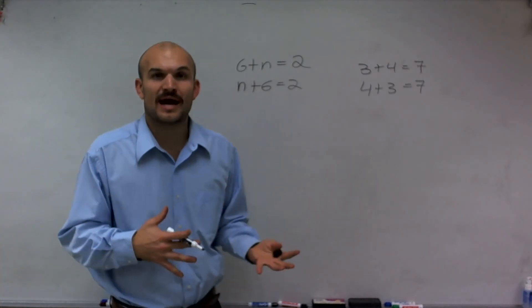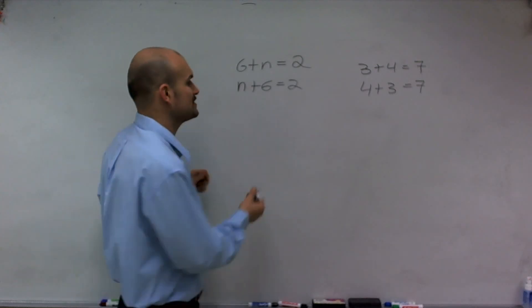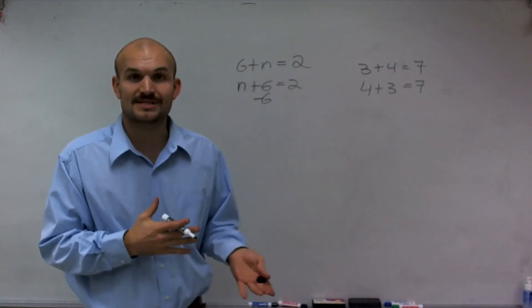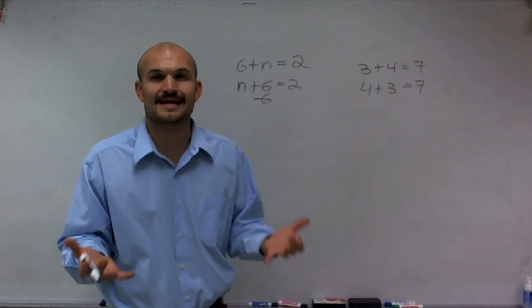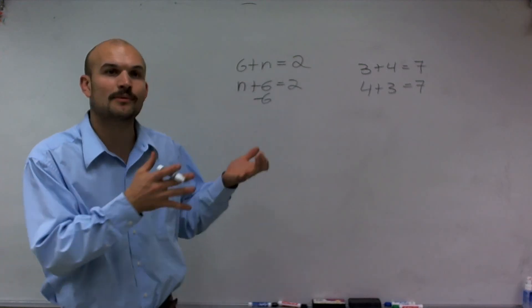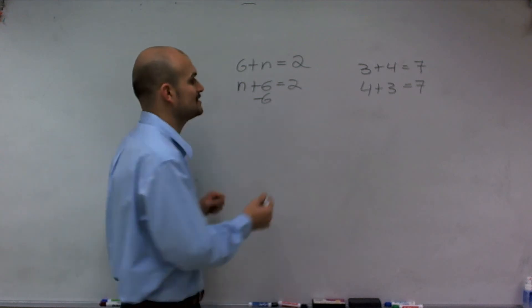So now to undo that, to undo addition of 6, we're going to have to subtract. What we're going to do is subtract on both sides of the equation. Because an equation is a statement of equality, meaning the left side of the equation is equal to the right side. So whatever operation we apply to the left side, we have to apply to the right side.